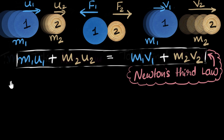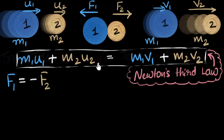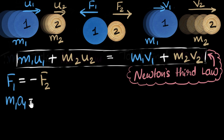So F1 equals negative F2. Now we have an equation with force, but we want to bring mass and velocity into the picture. The connection is Newton's second law — F = MA, one of the most famous equations in physics. We can write Newton's second law for both forces: F1 = M1·A1 for the first coin, and F2 = M2·A2 for the second coin. So we've brought mass into the picture. But we don't want acceleration — we want velocities.